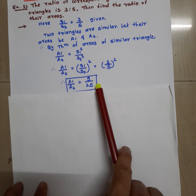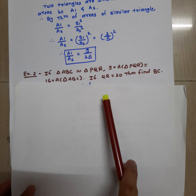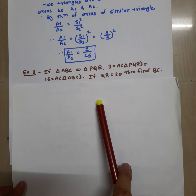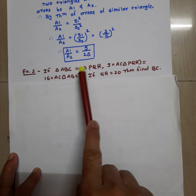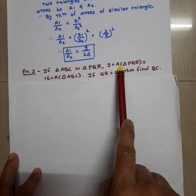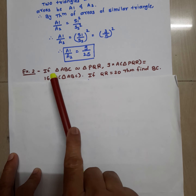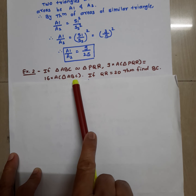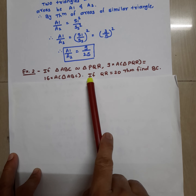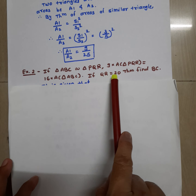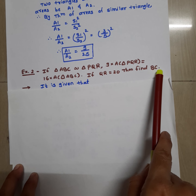Now consider the next example, which is exactly the opposite. Triangles are given which are similar, and the equation 9 times area of triangle PQR is equal to 16 times area of triangle ABC is given. If QR is equal to 20, then find BC.